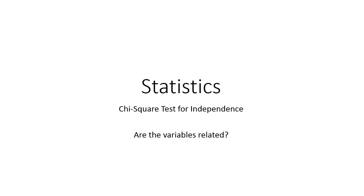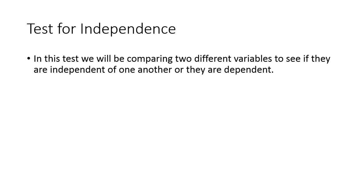So the first example we have is someone playing tennis. So test for independence. In this test, we will be comparing two variables to see if they are independent or dependent on each other. So if they're independent, that means they don't affect each other. So as you grow taller, you end up being smarter. Those are independent of each other. Just because you're taller doesn't mean you're smarter. Just because you're shorter doesn't mean you're dumber. Those are independent.